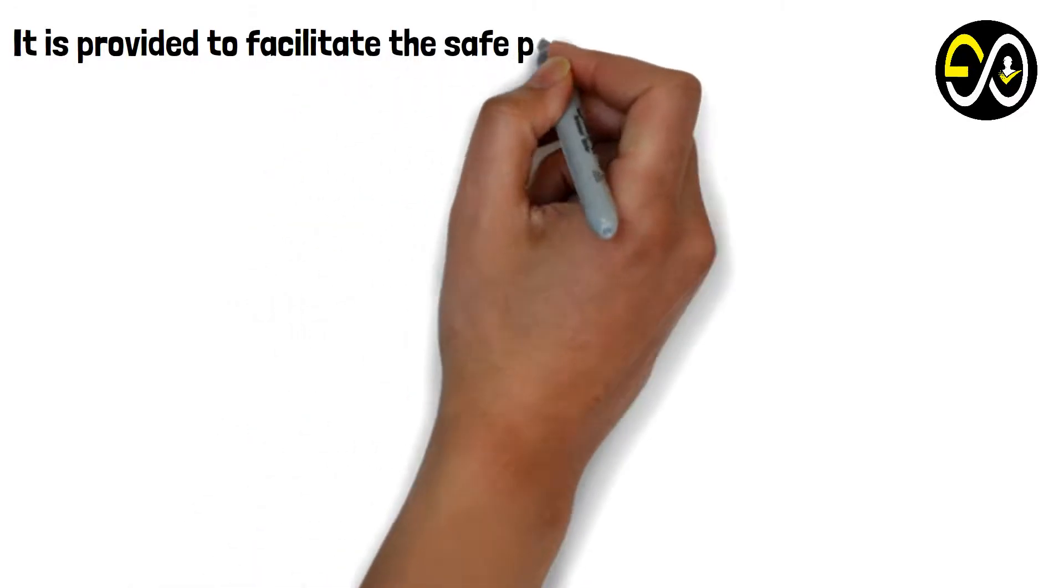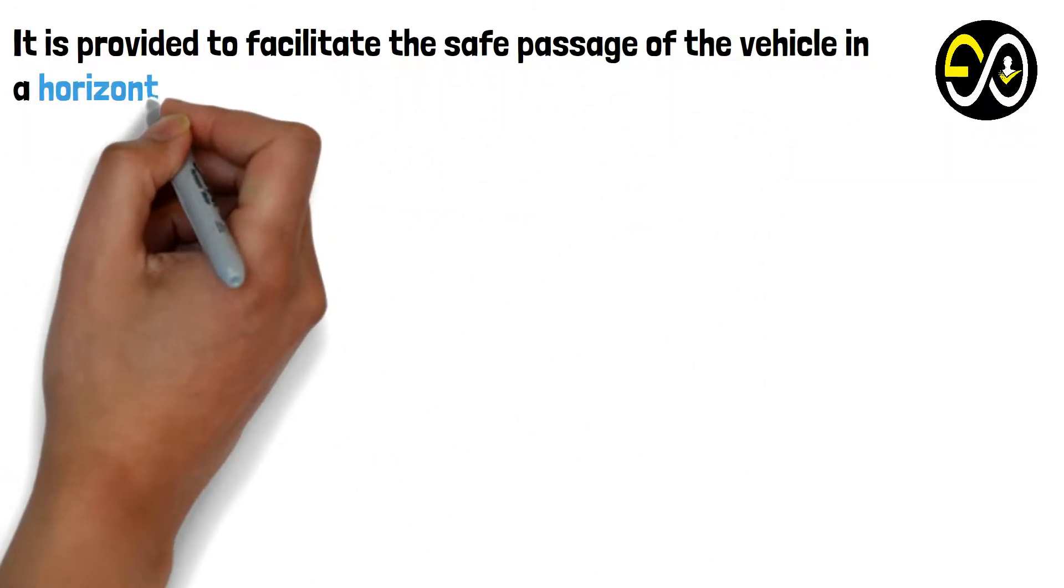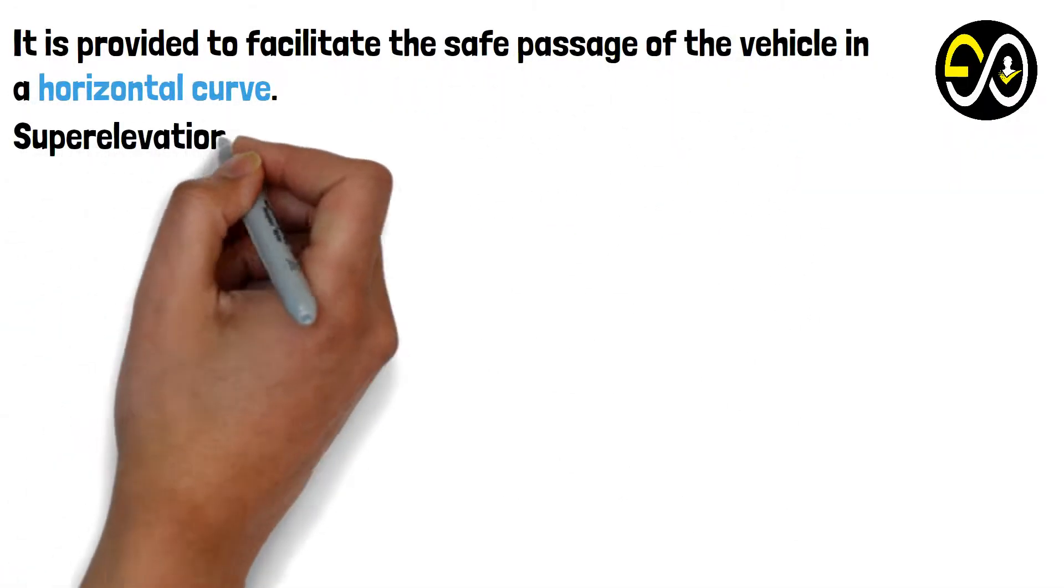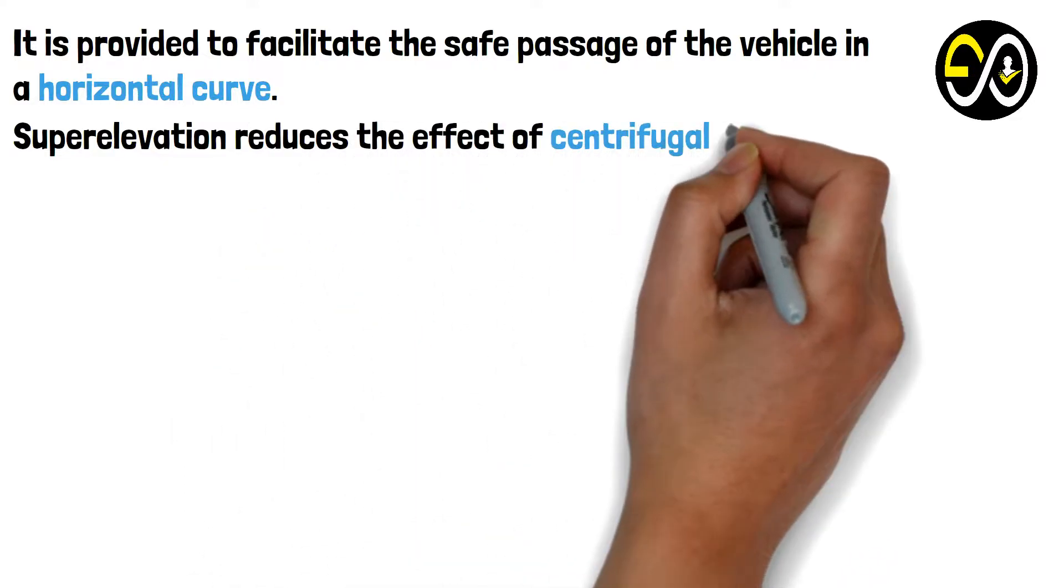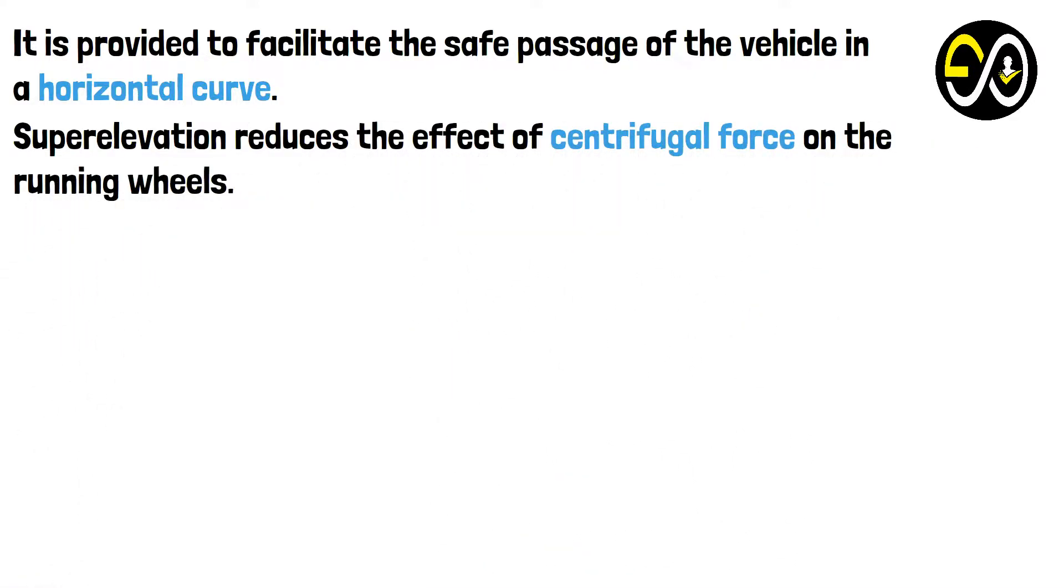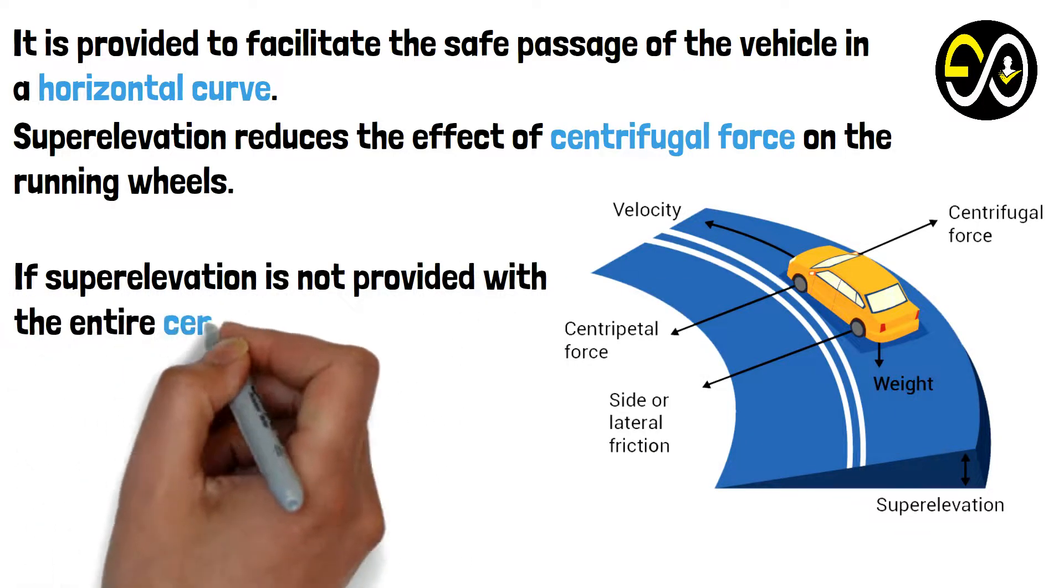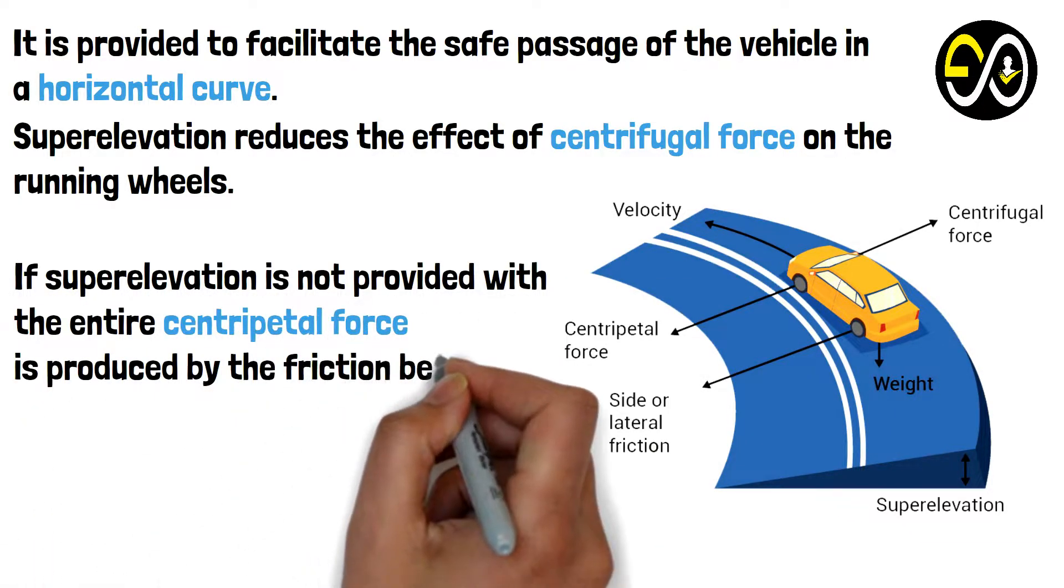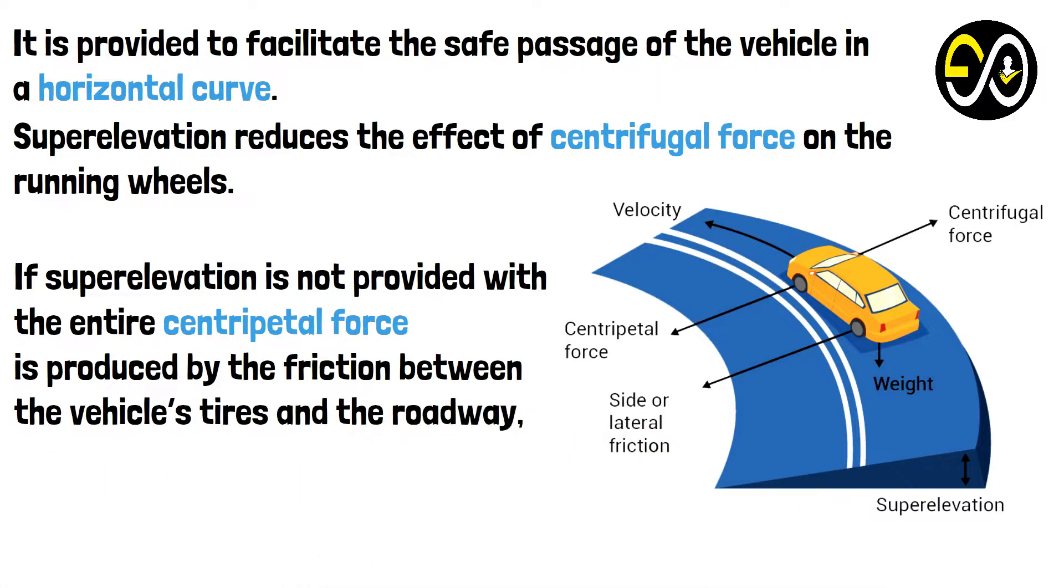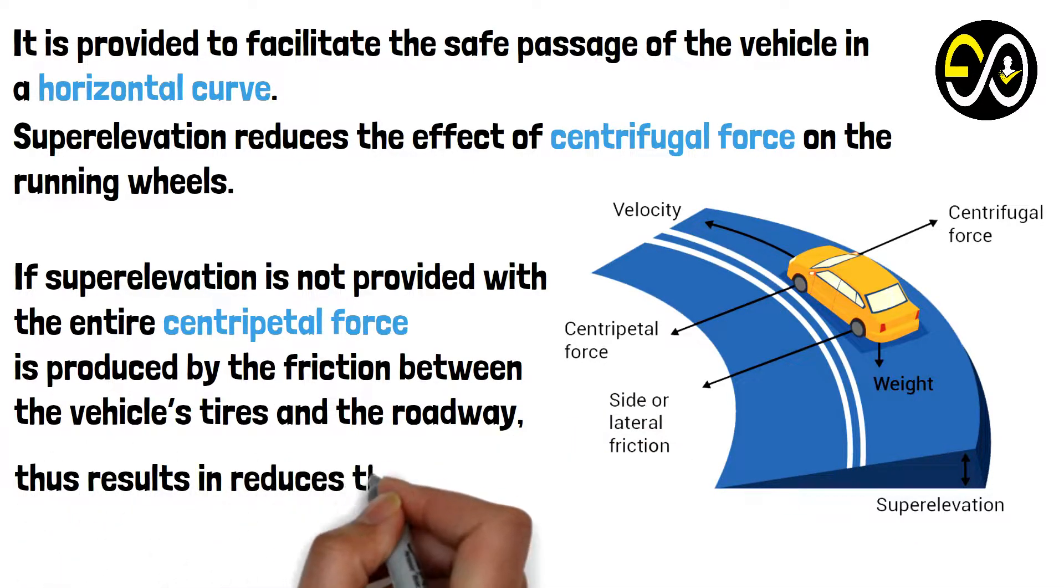It is provided to facilitate the safe passage of the vehicle in a horizontal curve. Superelevation reduces the effect of centrifugal force on the running wheels. If superelevation is not provided, the entire centripetal force is produced by the friction between the vehicle's tires and the roadway, thus resulting in reduced speed of the vehicle.